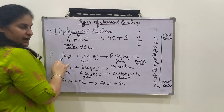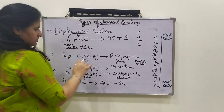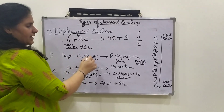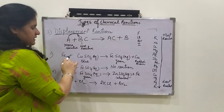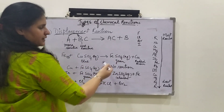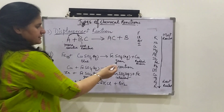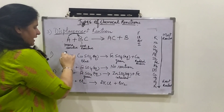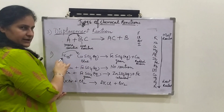For example, when iron is kept in an aqueous solution of copper sulphate, which is blue in colour, it has been observed that after a while this blue colour becomes green. When the solution becomes green, that indicates that some reaction has taken place. This green colour is because of the formation of iron sulphate, meaning iron has taken the place of copper. So iron is more reactive than copper.